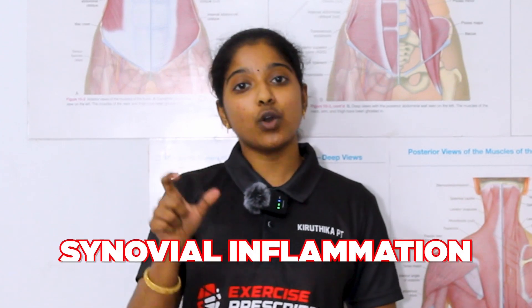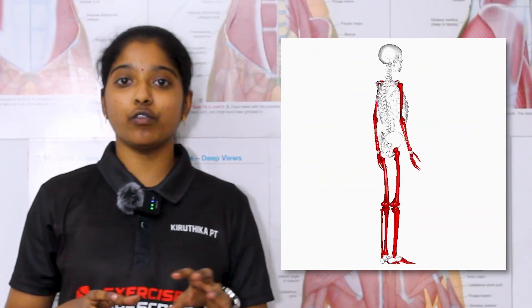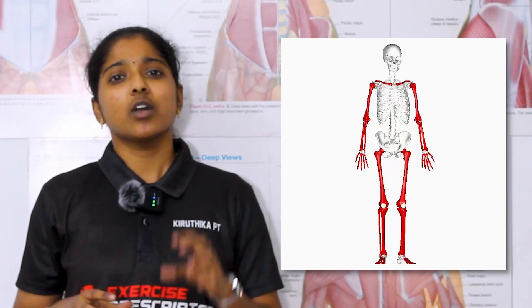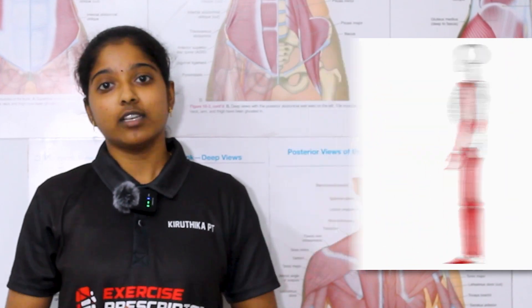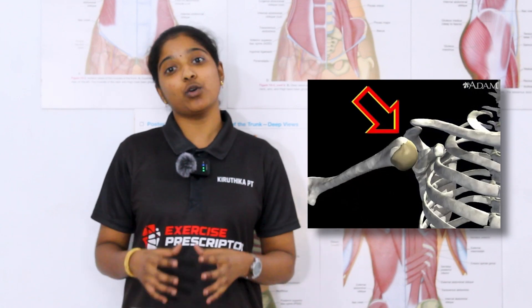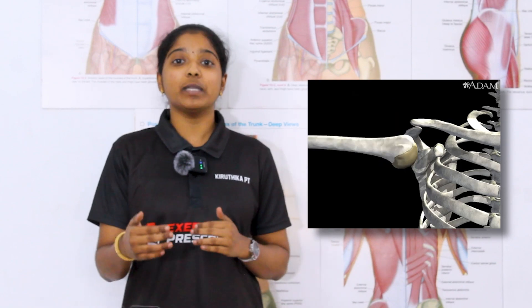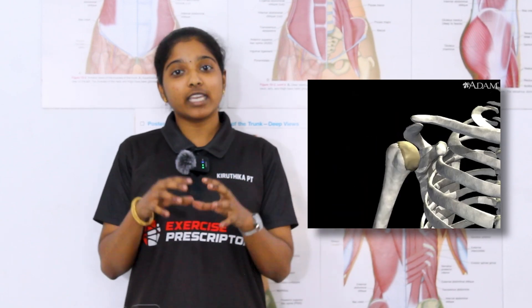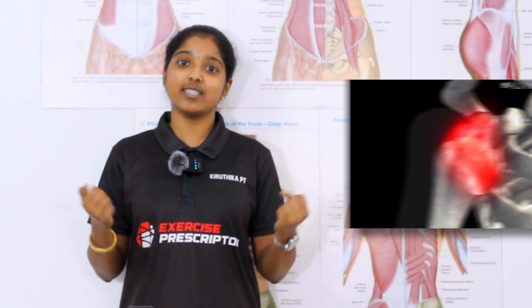As the name implies, synovial inflammation — this disease mainly affects the synovial joints. Among all the synovial joints, why does it mainly affect the shoulder joint and not others? To know the reason, we have to understand the anatomy of the shoulder joint and its capsule. The shoulder joint is the only synovial joint that is most mobile and least stable. To provide better mobility, naturally the capsule of the shoulder joint has become very thin and has high extensibility.